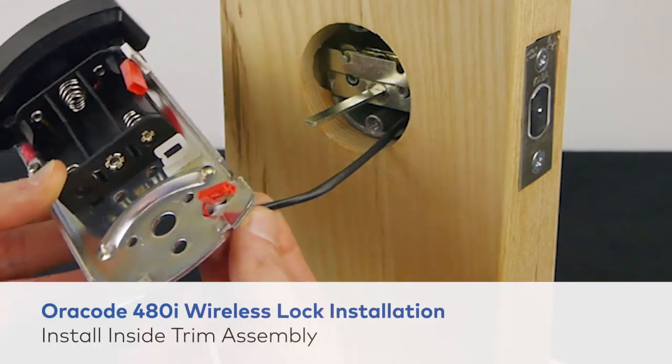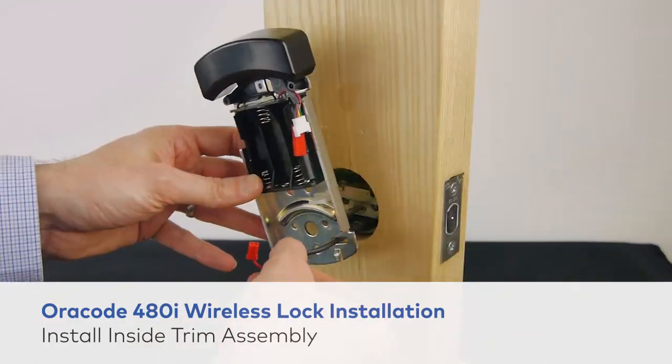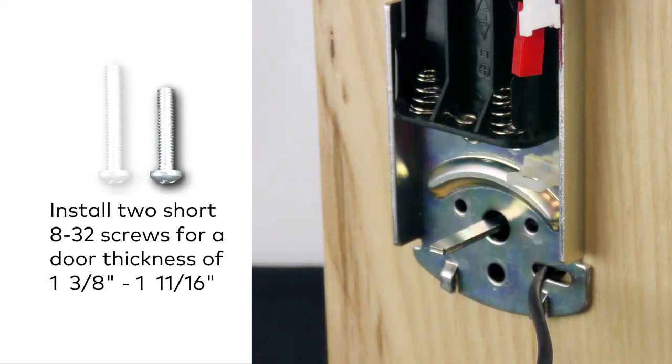Remove the tape from the deadbolt. To install the inside trim assembly, route the cable through the assembly.